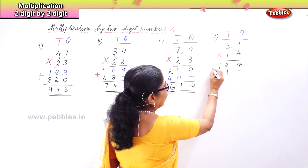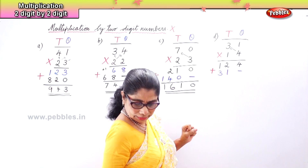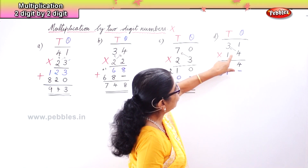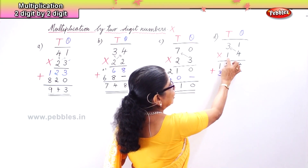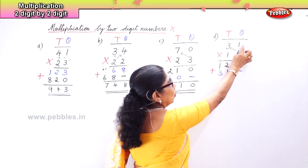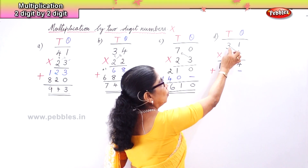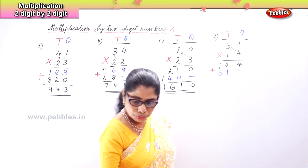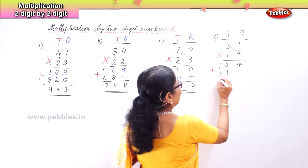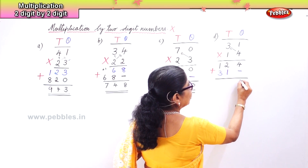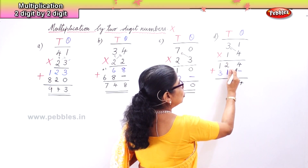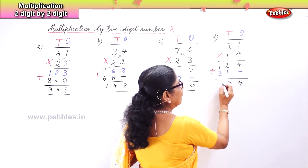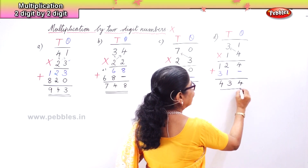Now for the second digit: put a dash. One into one is one. One into three is three. Now we add the two rows together. Bring down 4, two plus one is three, three plus one is four. The answer is 434.